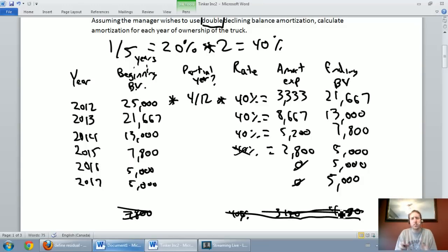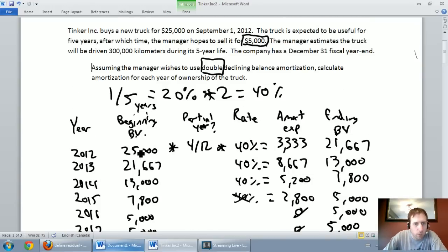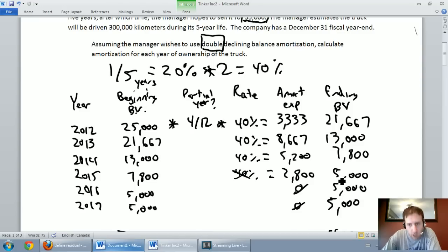Double declining balance, as you can see, is a much more aggressive amortization method. Interestingly, we don't start with our amortizable cost, we start with our book value or the cost of our asset, and we amortize based on that. Where our residual value comes in is we've got to know when to stop amortizing the asset. In this case, we stopped in 2015. That was our final year of amortization. After that, if we're still using the asset and we still think it can be traded for $5,000, we just keep it on the books at $5,000.